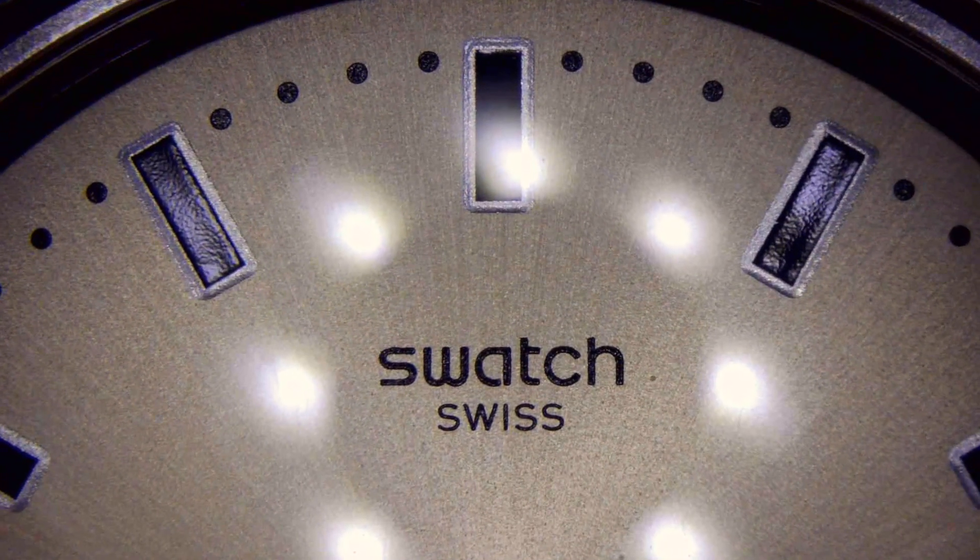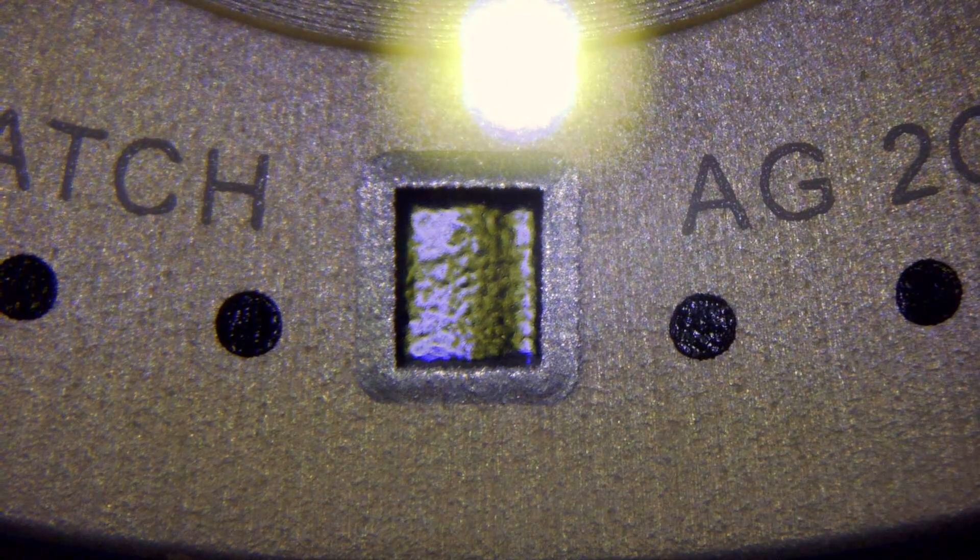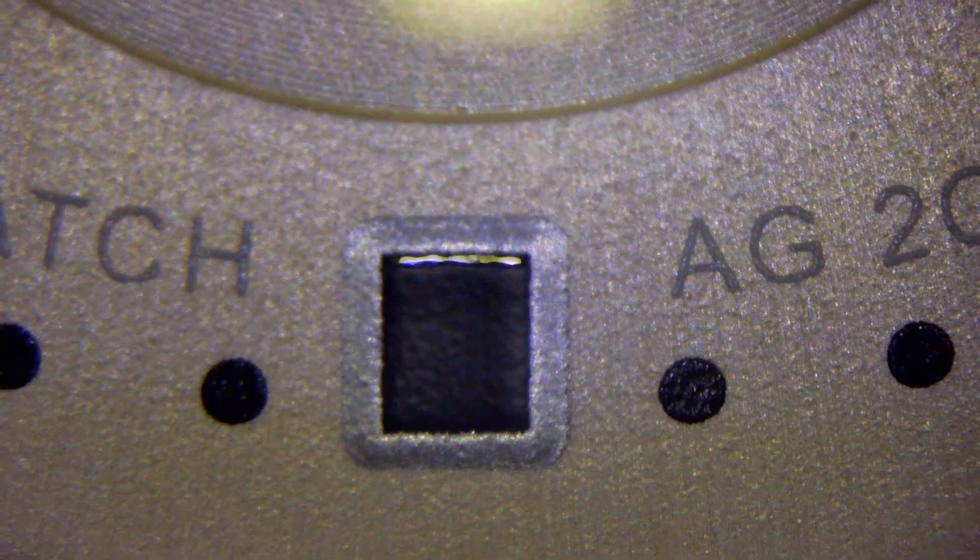Closer look at the dial reveals overall not bad dial finishing with sunburst glossy black markers with silver borders around it. The off-center seconds hand was clearly made of some machine stamping process with no finishing at all. Hour and Minute hands on the other side are nicely rounded with a stripe of lume at the ends.